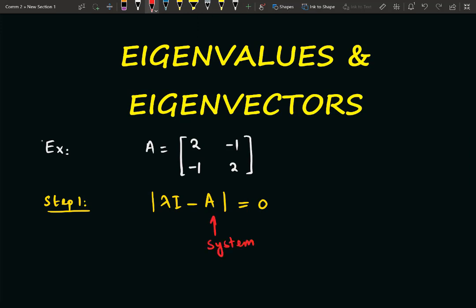This I is the identity matrix, and this λ are the eigenvalues.